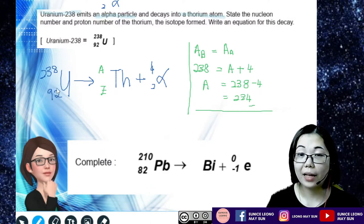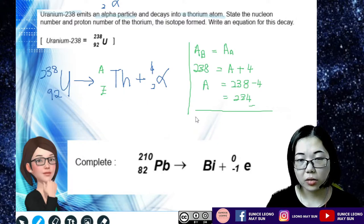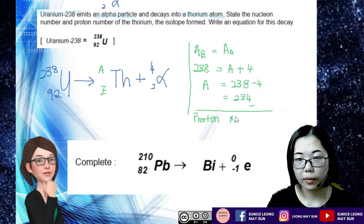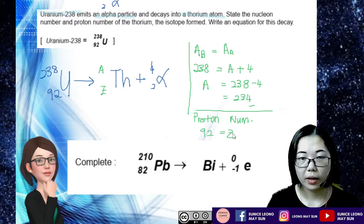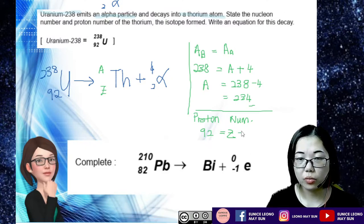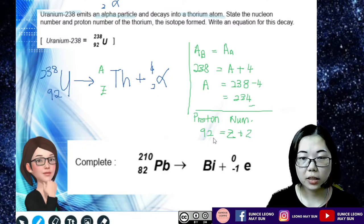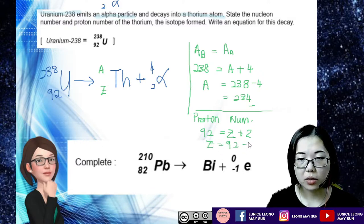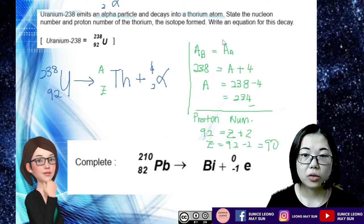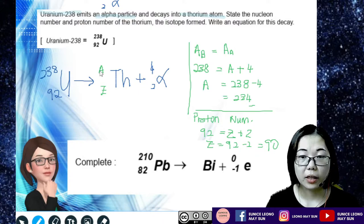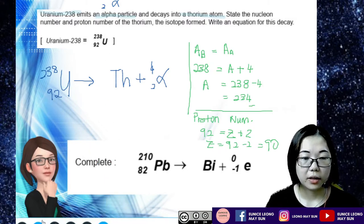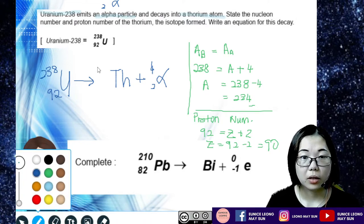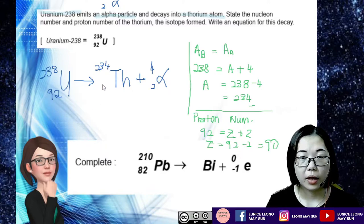The next step is to balance the proton number. Before the reaction we have 92. After the reaction we have Z plus alpha's proton number, which is 2. So Z equals 92 minus 2, giving us 90. So the nuclear number for thorium is 234 and the proton number is 90.